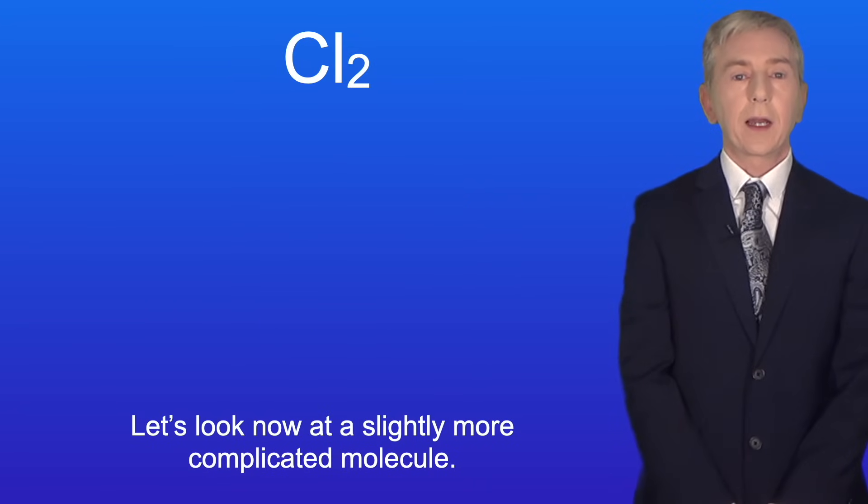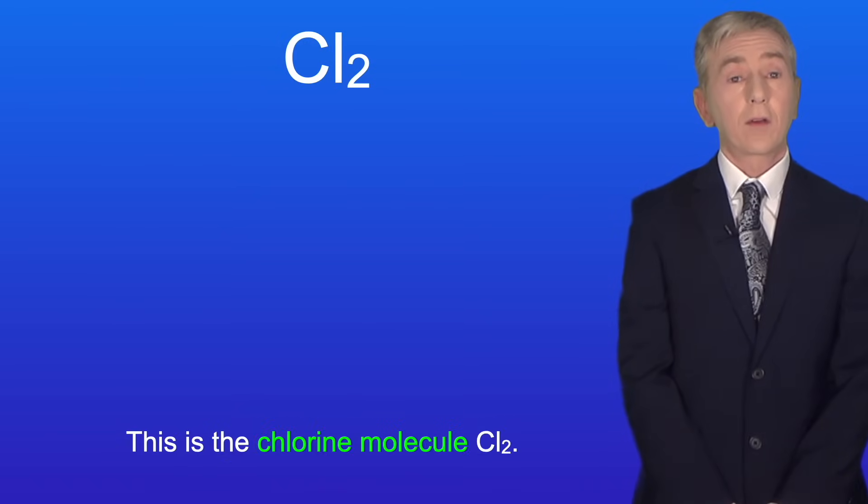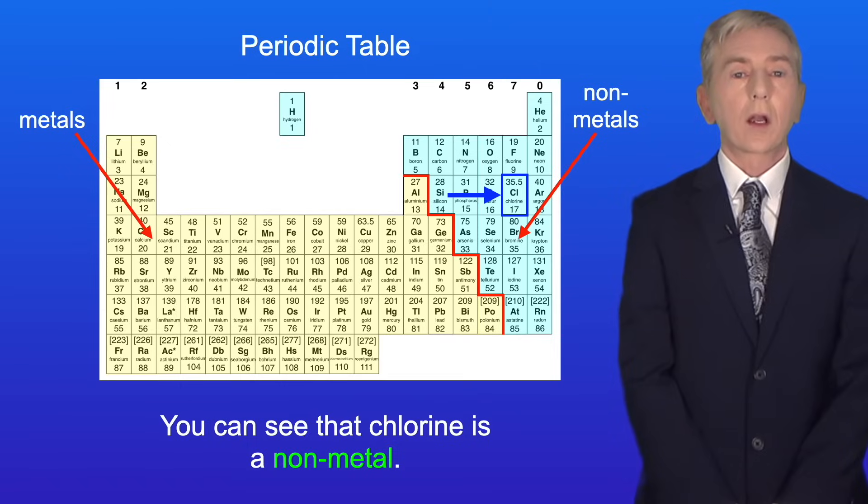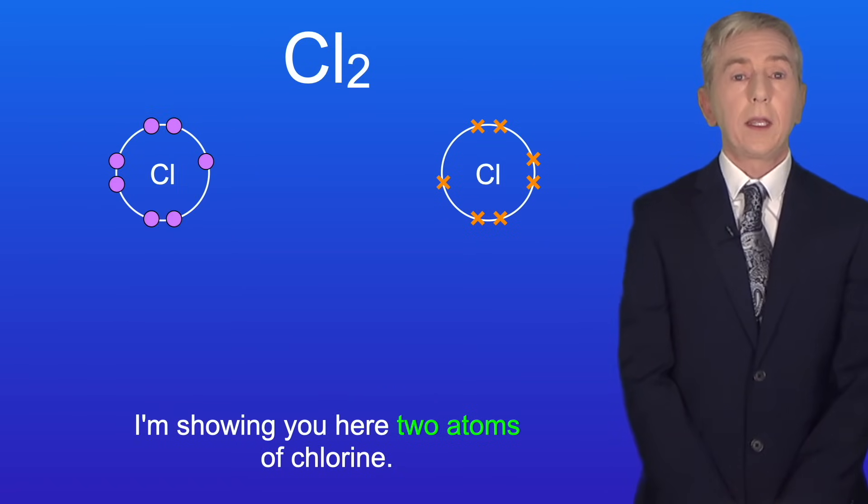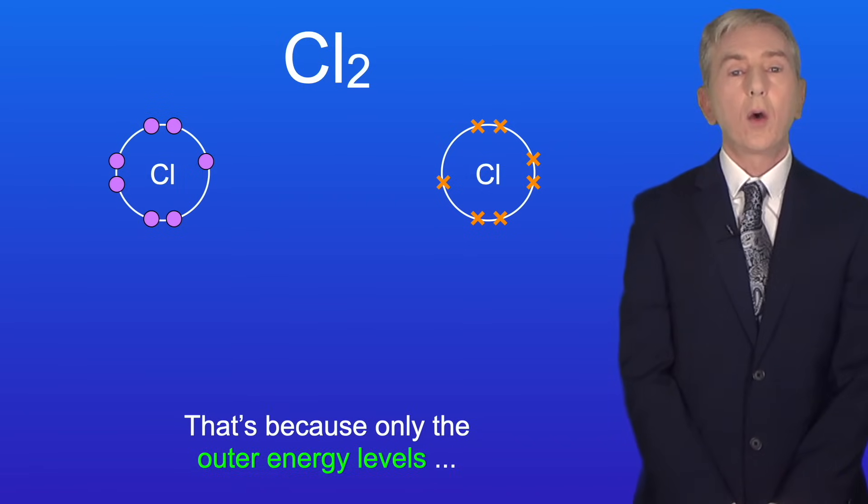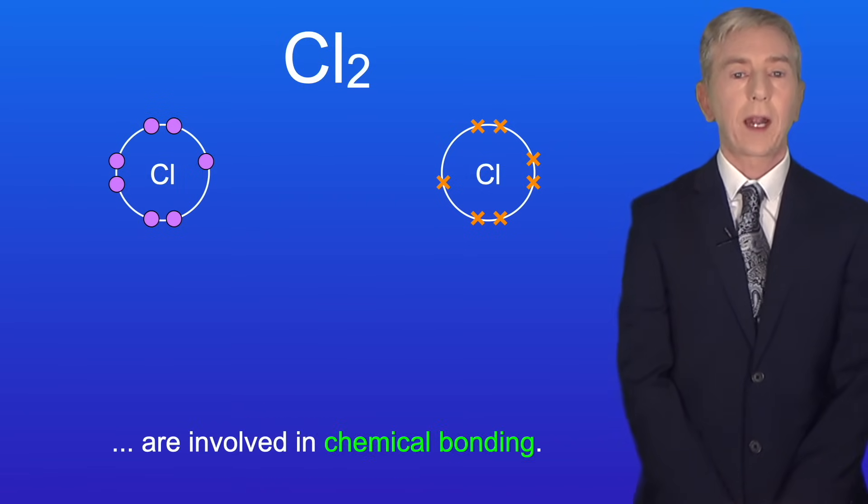Okay let's look now at a slightly more complicated molecule. This is the chlorine molecule Cl2. Here's chlorine in the periodic table and you can see that chlorine is a non-metal. I'm showing you here two atoms of chlorine and notice that I've only drawn the outer energy levels. That's because only the outer energy levels are involved in chemical bonding.